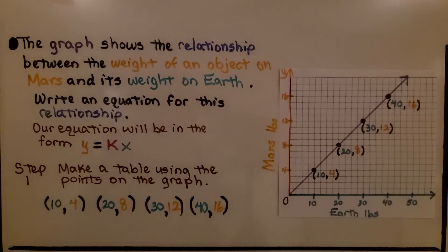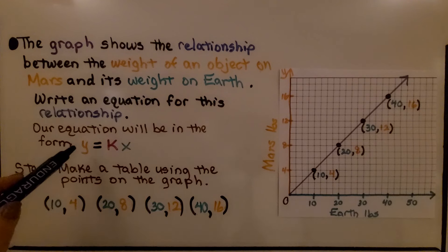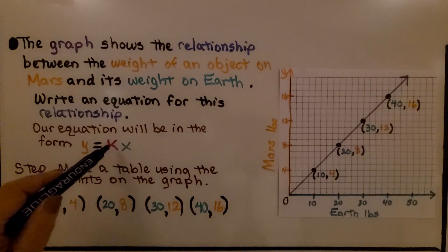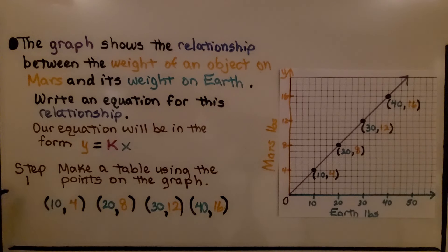The graph shows the relationship between the weight of an object on Mars and its weight on Earth. We're going to write an equation for this relationship. Our equation will be in the form y = kx. Step 1, make a table using the points on the graph.